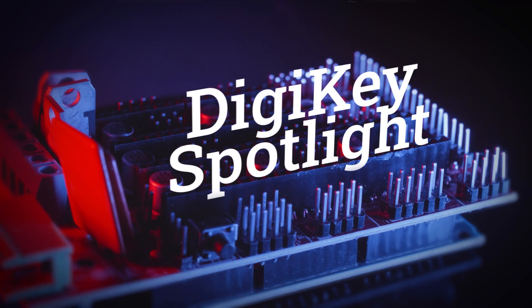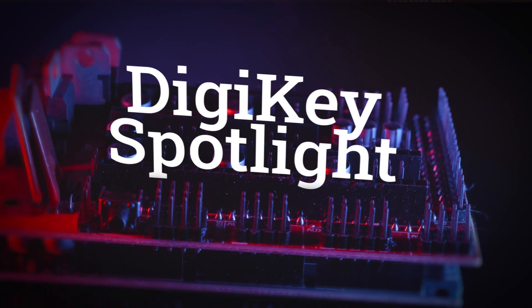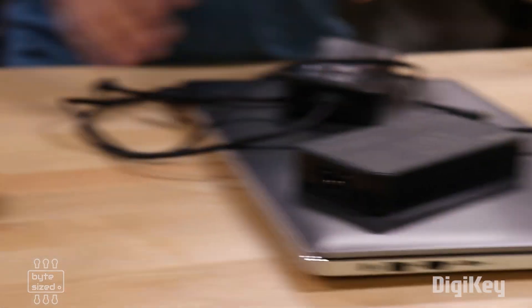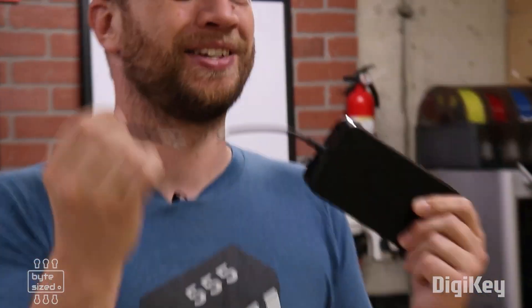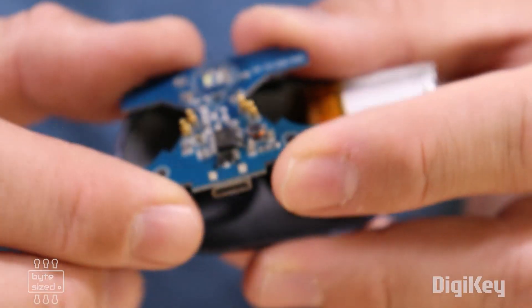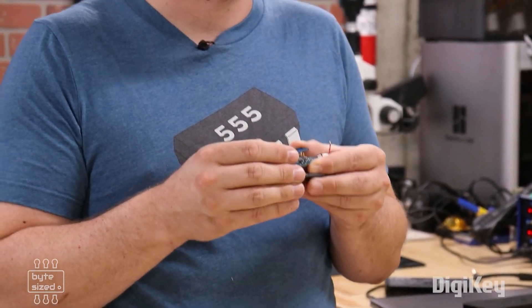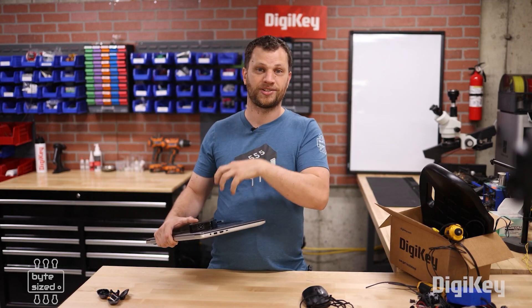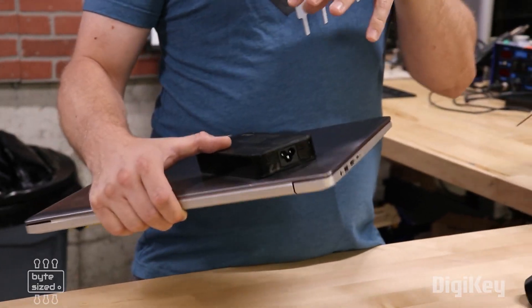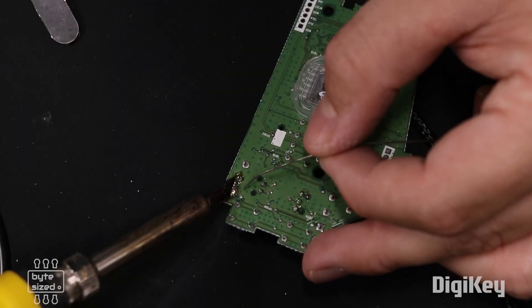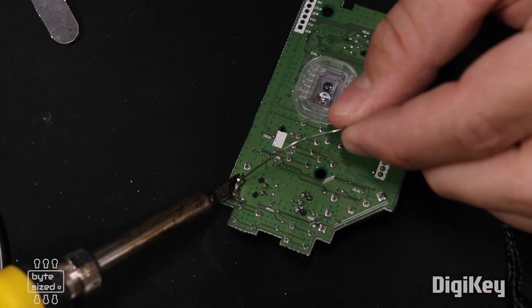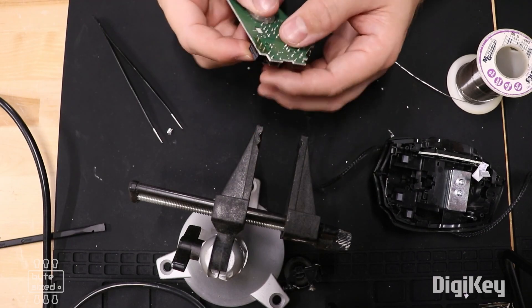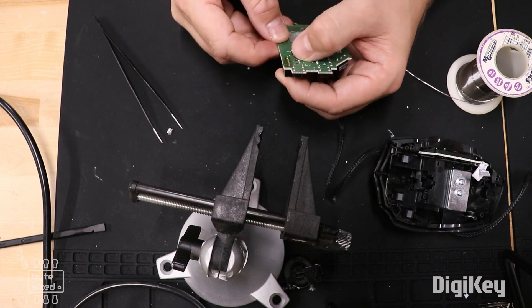For this week's DigiKey spotlight, the Bite-Sized Engineer has a video that speaks directly to my heart: when to fix things and when it's not worth the effort. Personally, I hate throwing things away, but there are times when the effort required to fix it just isn't worth your time. Zach shares a few examples of when it wasn't worth his before diving deep on a repair for a computer mouse that's important to the way he works and how to get it back into working order. It's a cool deep dive into a specific way of working with electronics.